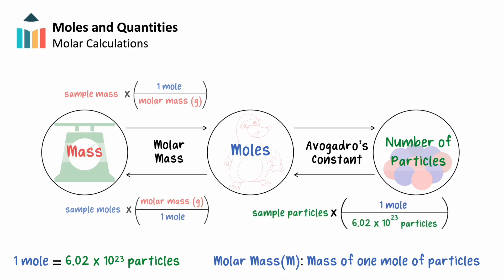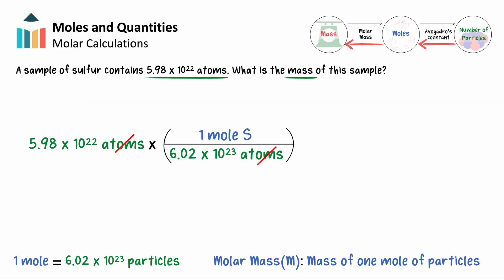We converted from atoms to moles by dividing by Avogadro's constant. In the opposite direction, we could convert from moles to atoms by instead multiplying by Avogadro's constant. Continuing on, to convert from moles to mass, we'll use molar mass.